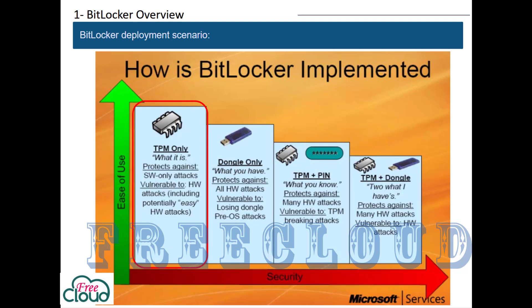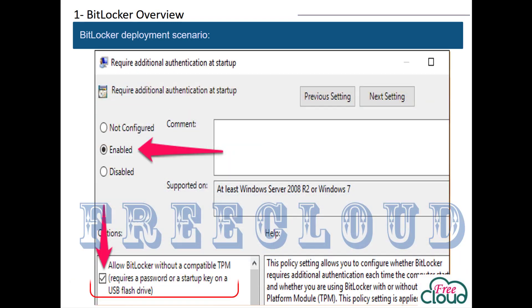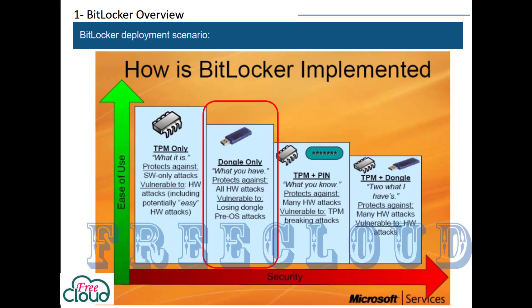TPM only: uses the computer's TPM security hardware and doesn't require any interaction with the user to unlock and provide access to the drive. This means the user can start the computer without being prompted for a PIN or anything else. Dongle only: this scenario requires using Active Directory group policy to allow BitLocker without a TPM, and uses a startup key on a USB flash drive instead of TPM. However, the loss of the USB can put the protected system at risk.